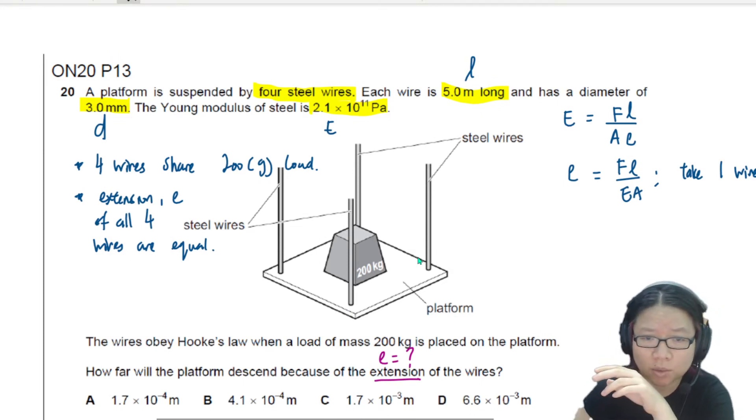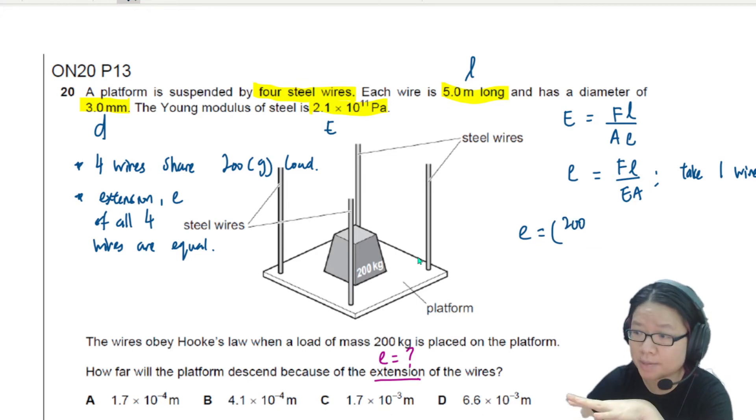So for one single wire, the force is 200 times 9.81 divided by 4. So I'm going to show the whole working, but of course, you can just write 50 over 4. It's no big deal. Divided by 4. This is my force on a single wire. I take one wire only.